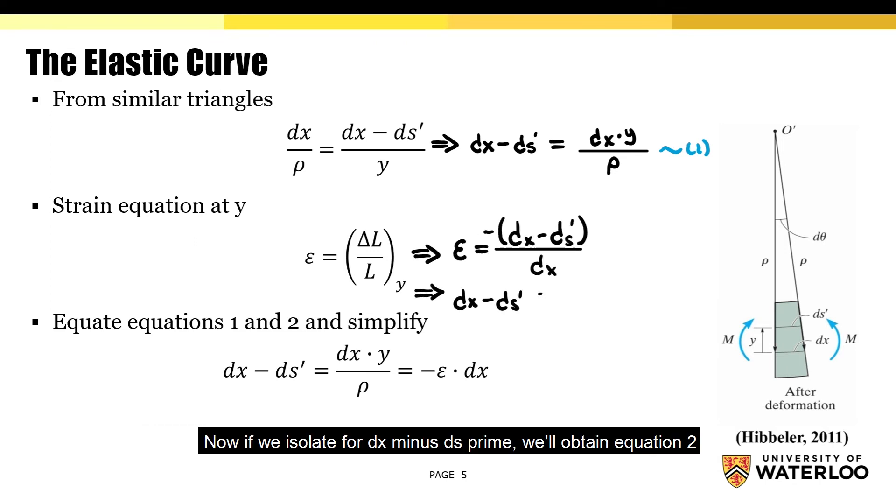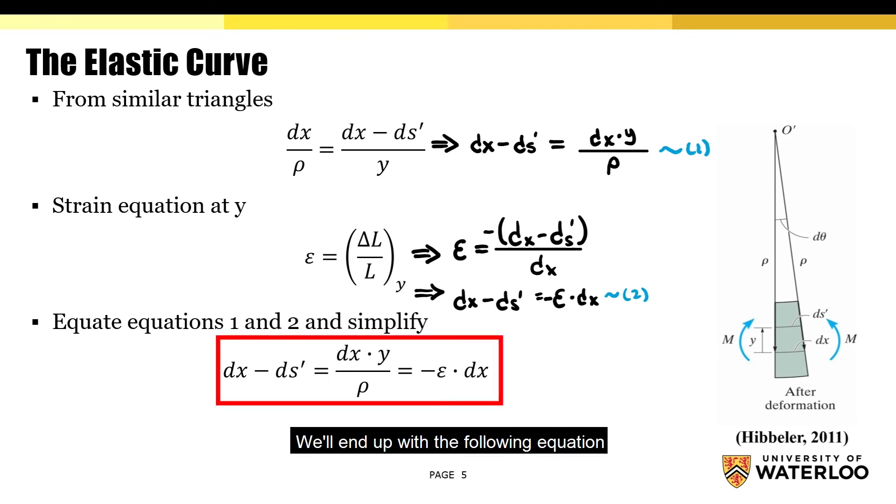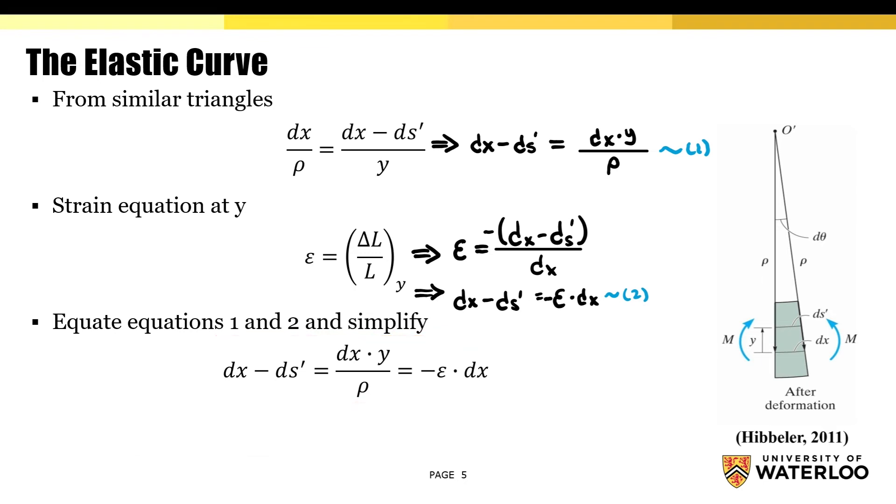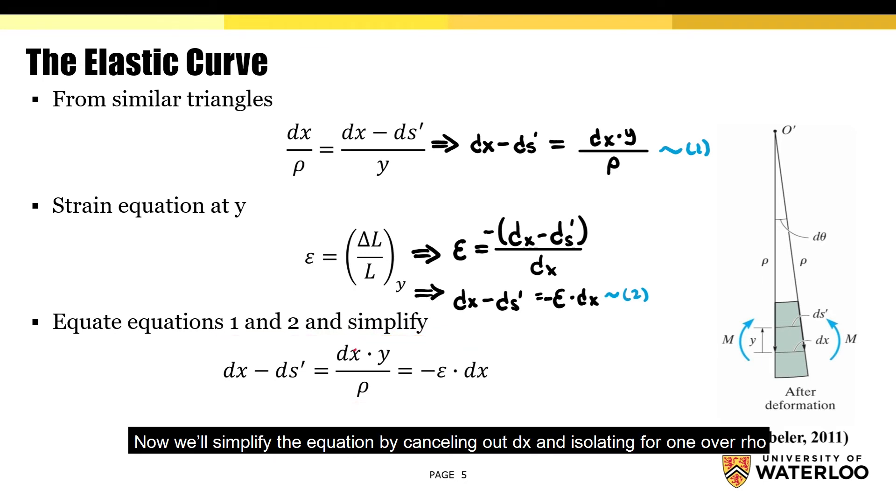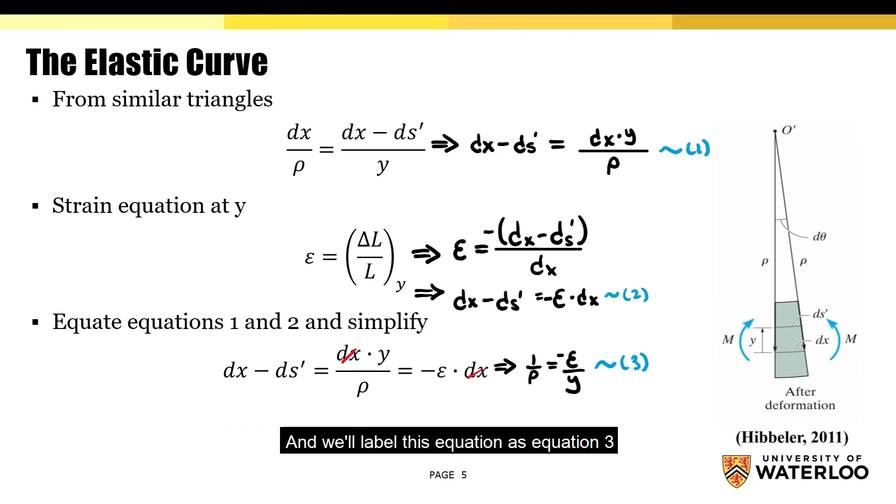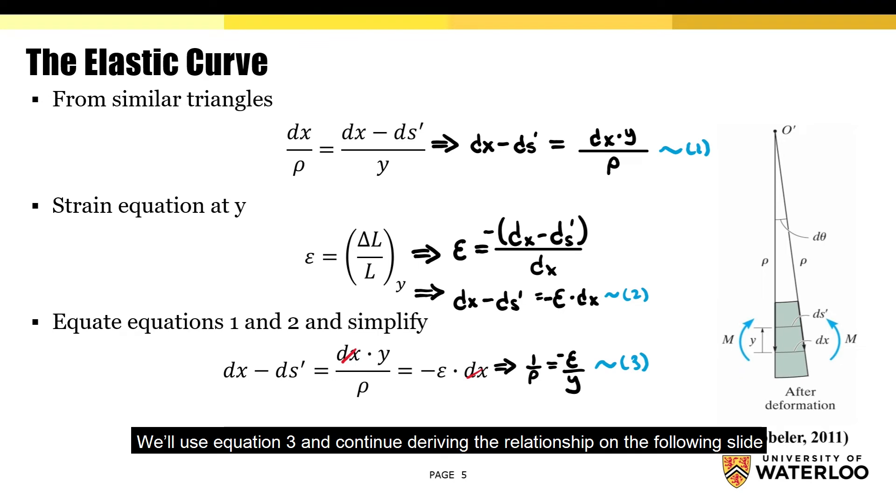Now, if we isolate for dx minus ds', we'll obtain equation 2. Now, if we equate equations 1 and 2, we'll end up with the following equation. Now, we'll simplify the equation by canceling out dx and isolating for 1 over ρ. And we'll label this equation as equation 3. We'll use equation 3 and continue deriving the relationship on the following slide.